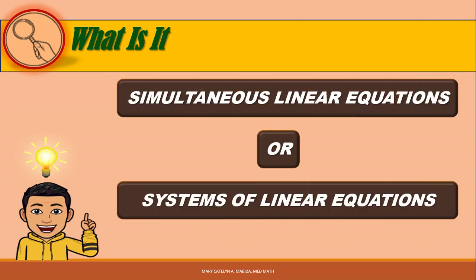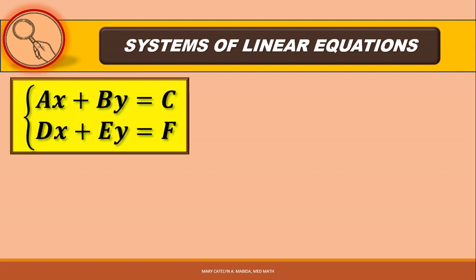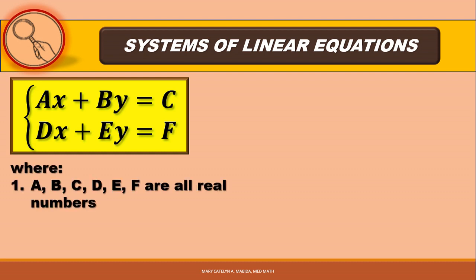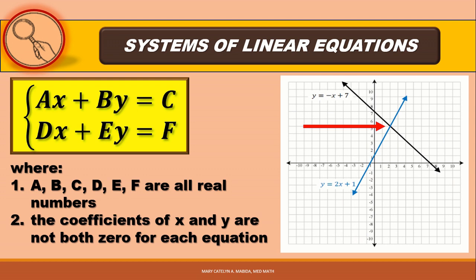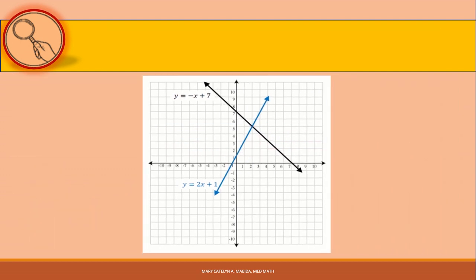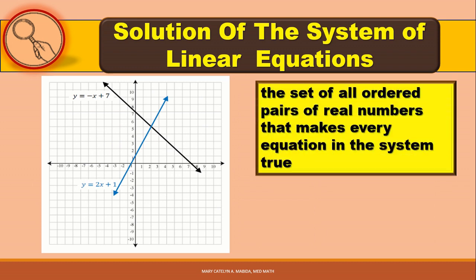Those pairs of linear equations are called simultaneous linear equations, or systems of linear equations. A system of linear equations is a set or collection of linear equations all of which must be satisfied. It can be written as Ax + By = C and Dx + Ey = F, where A, B, C, D, E, and F are all real numbers, and the coefficients of x and y are not both zero for each equation. The point of intersection of the graphs is the solution of the system.